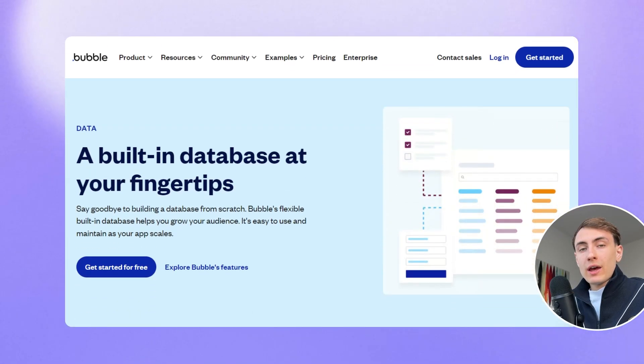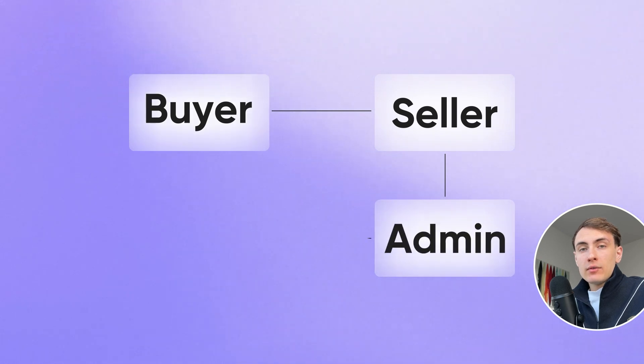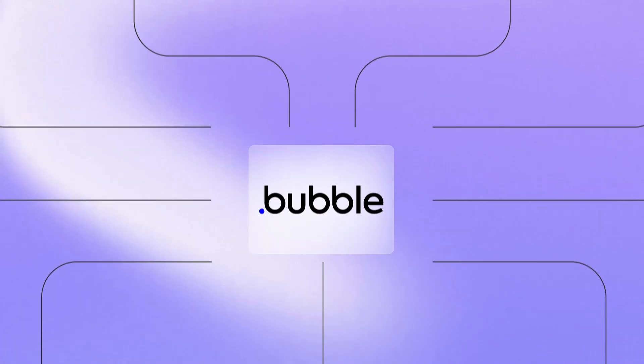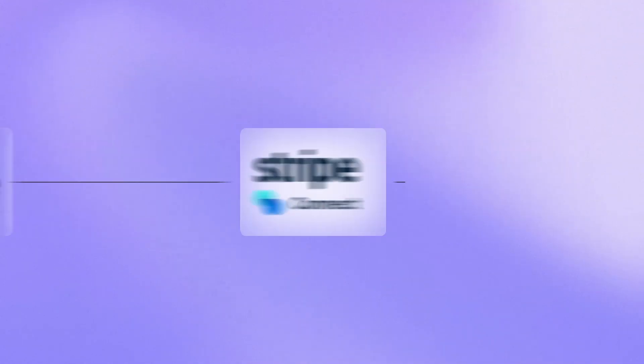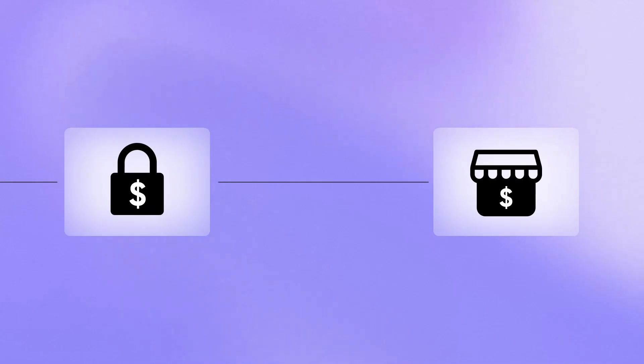In Bubble you can have a flexible database. It allows you to build marketplaces with multiple user roles — you can build two-sided, three-sided, and even multi-sided marketplaces. Bubble is capable of complex integrations including payment processing integrations. In Bubble you can connect Stripe Connect, which will allow you to enable safe transactions on the marketplace and will help you to monetize your marketplace by charging parties transaction fees. The capabilities are unlimited.